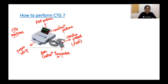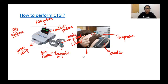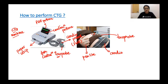The cardio probes are placed where the fetal heart rate is best heard. The tocoprobe is near the fundus of the uterus and the cardio probe is down below where the fetal heart rate is heard at maximum intensity. The woman holds a pen-like button in her hand, and every time she perceives fetal movement she clicks it, which gets recorded on the CTG paper strip.